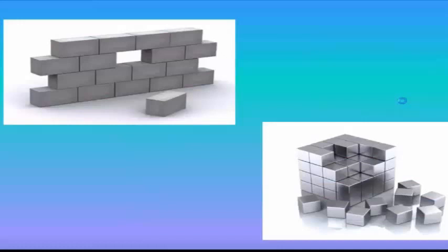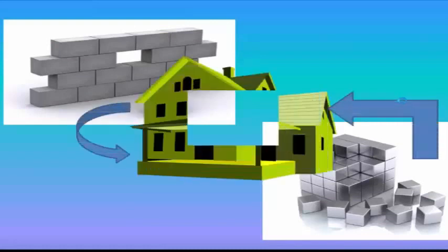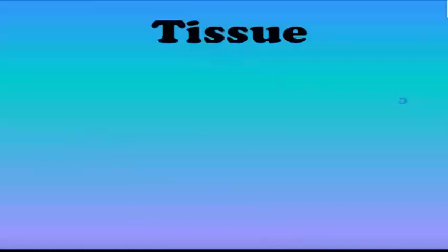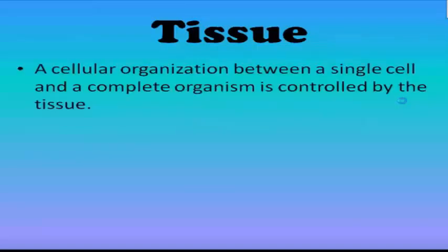Every house needs blocks. Without blocks, a house cannot be made. The same is true for living organisms — without tissue, all living organisms are not existent. A cellular organization between a single cell and a complete organism is controlled by the tissue.